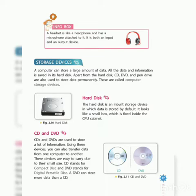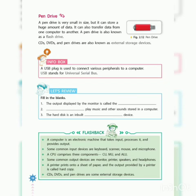The second storage device is CD and DVD. CDs and DVDs are used to store a lot of information. Using these devices you can also transfer data from one computer to another. These devices are easy to carry due to their small size. CD stands for Compact Disc and DVD stands for Digital Versatile Disk. A DVD can store more data than a CD.